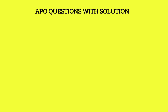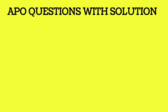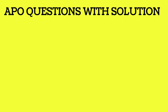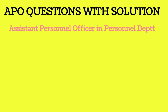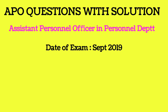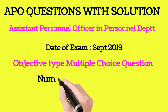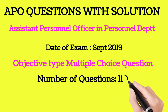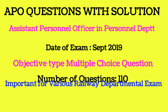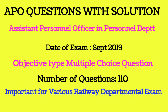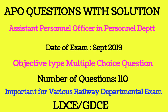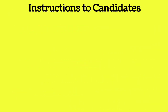This video covers APO (Assistant Personal Officer) exam questions with solutions — the complete question set from the APO exam conducted in September 2019 in SWR. Most questions come from establishment topics. These are all objective type multiple choice questions, with 110 questions total, and this video will be important for various railway department examinations wherever establishment, finance, or Raj Vasa topics appear.